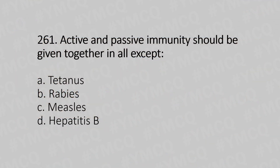Active and passive immunity should be given together in all except: Option A, Tetanus; Option B, Diabetes; Option C, Measles; Option D, Hepatitis B. And the answer is Option C, Measles.